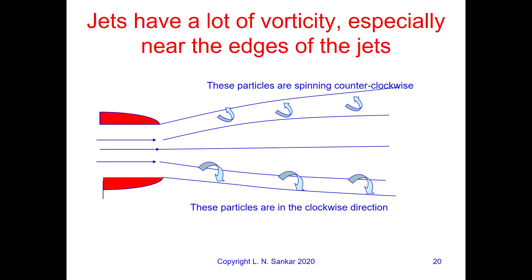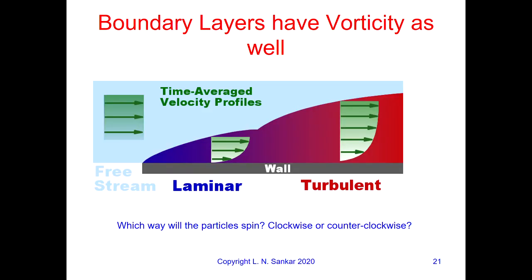At the top edge of a jet, the bottom is moving faster and the top is moving slower, so particles rotate counterclockwise, and vice versa at the bottom edge. The same applies in the boundary layer — the edge is moving faster while wall particles are stuck at zero velocity. This is like stepping on chewing gum: your foot stops, your head keeps moving, and you somersault in a clockwise direction. That is what happens in the boundary layer.